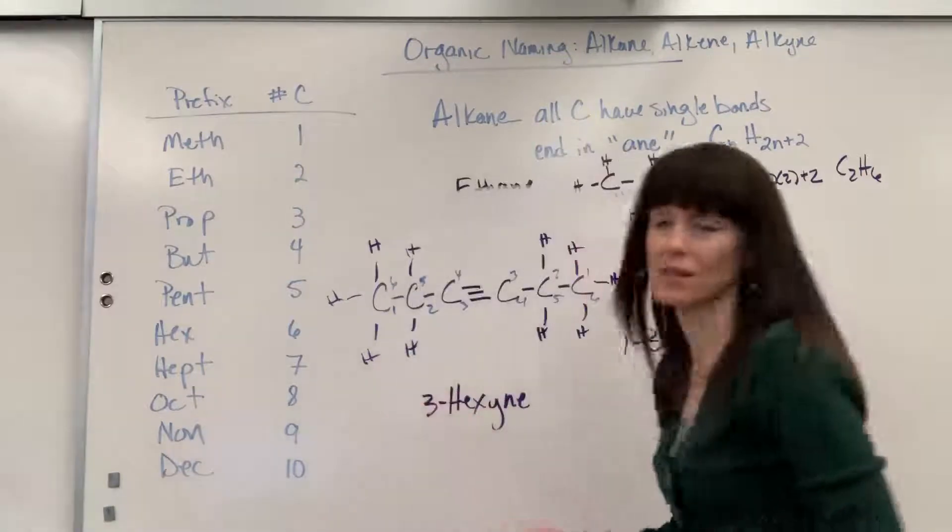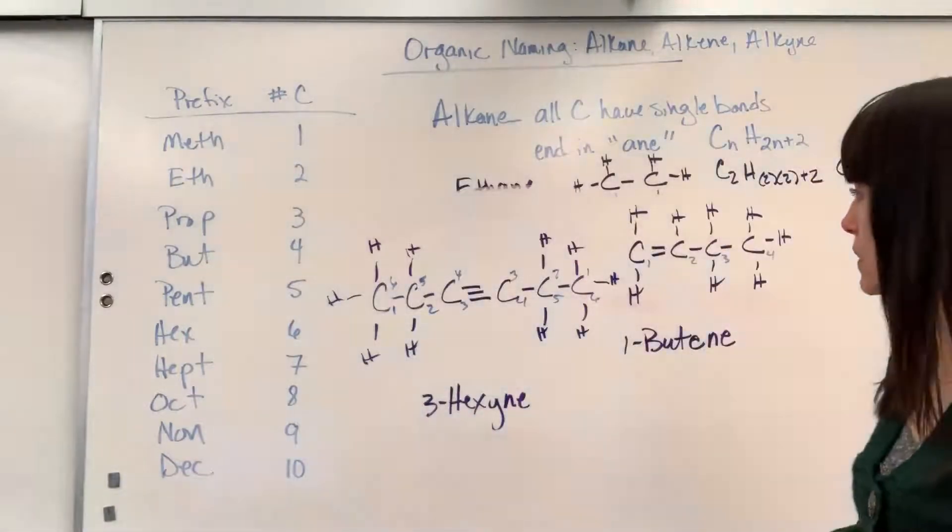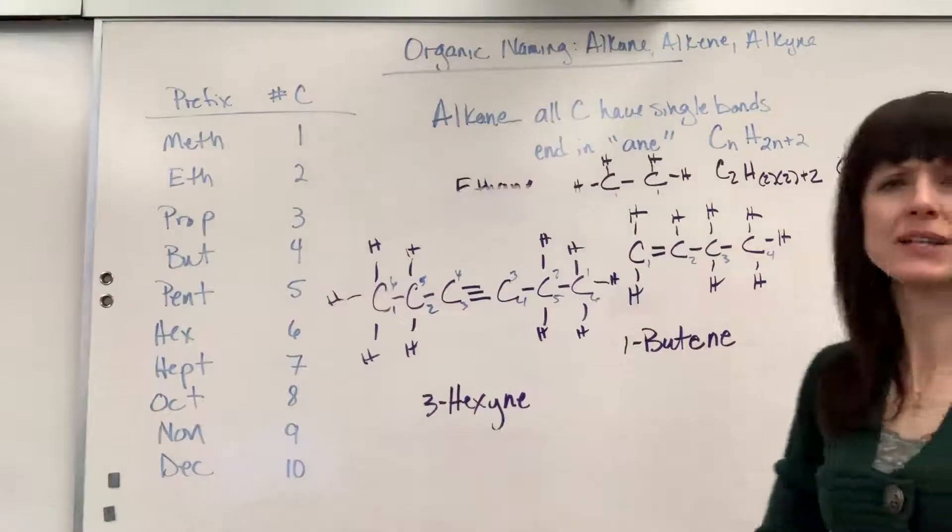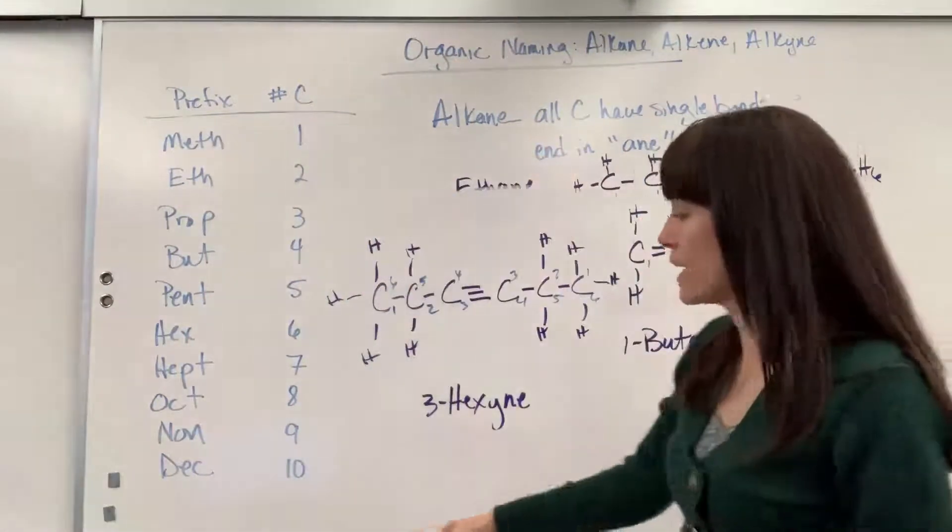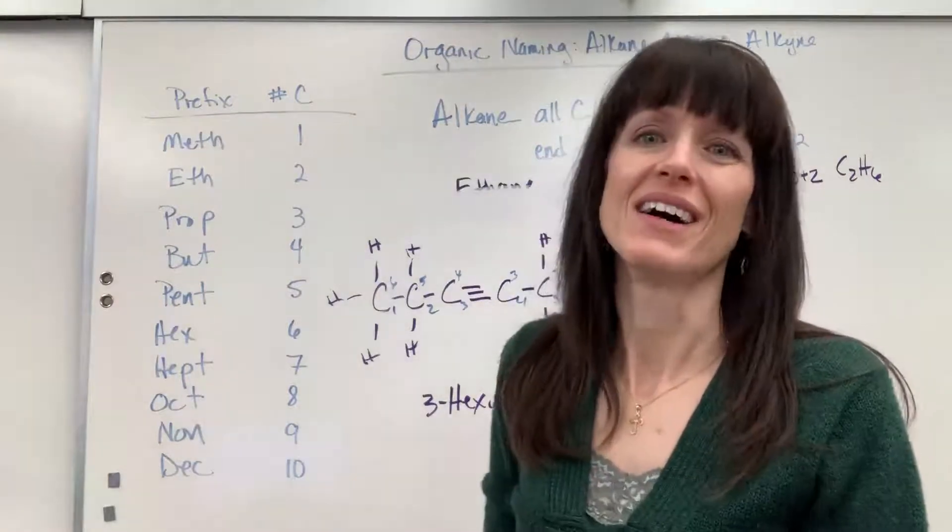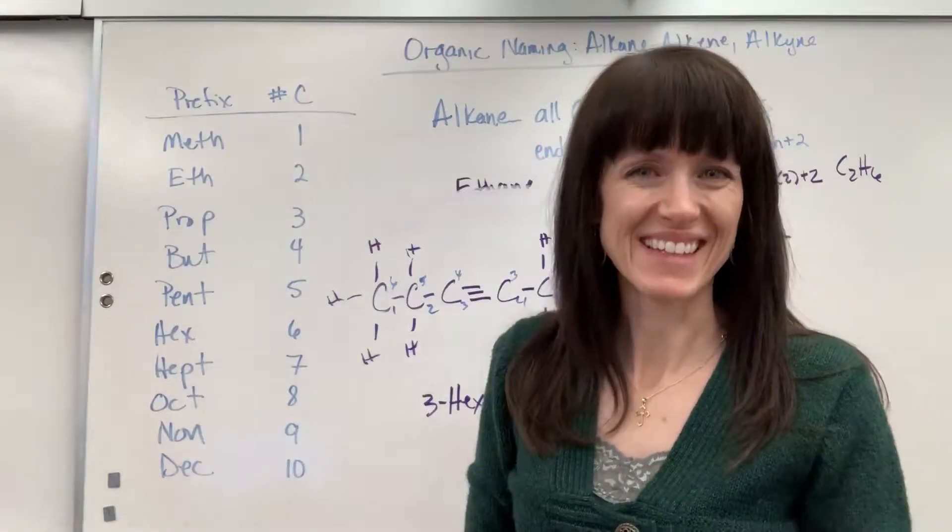This is going to be a 3-hexyne. And notice how I put a dash between the number and the name. That's going to be a 3-hexyne. So just really basic prefixes. Alkane, alkene, alkyne. That gives you a good start in naming your organic compounds. Thank you.